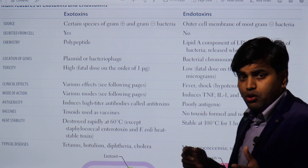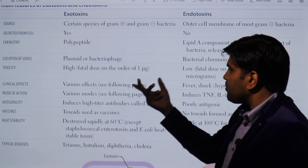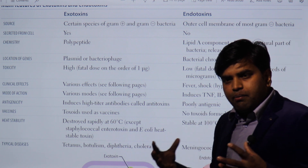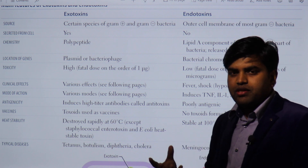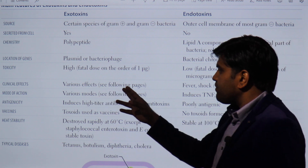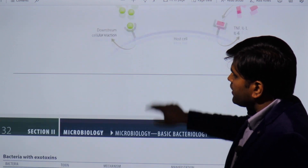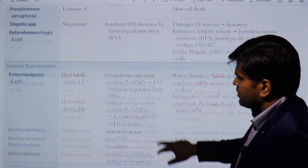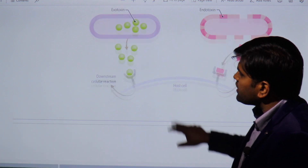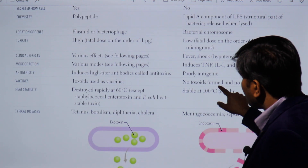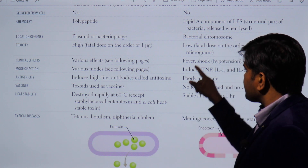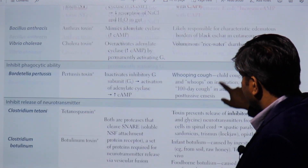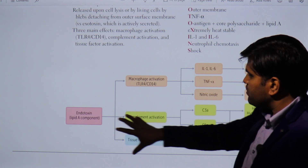Regarding toxicity: exotoxins are highly fatal — as little as one microgram can be fatal. Endotoxins are less fatal individually, but cause endotoxic shock when large numbers of bacteria are killed inside the body. Clinical effects of exotoxins vary by organism — examples include cholera toxin, diphtheria toxin, Shiga toxin, anthrax toxin — each causing different effects. Endotoxins from all gram-negative bacteria produce endotoxic shock: fever, hypotension, and disseminated intravascular coagulation (DIC).